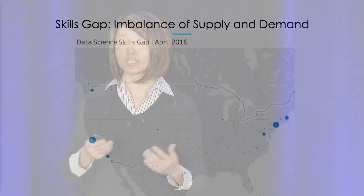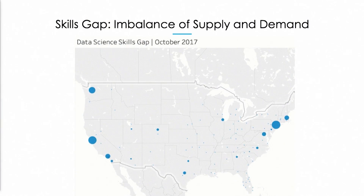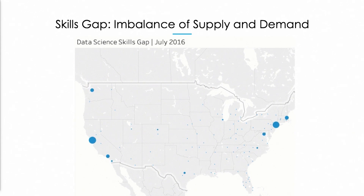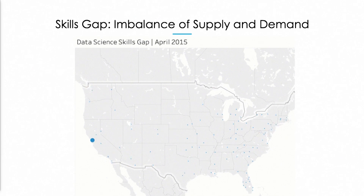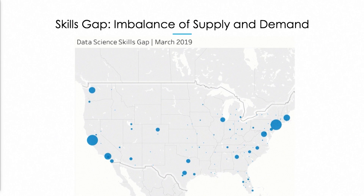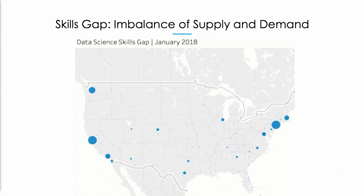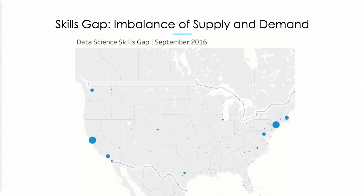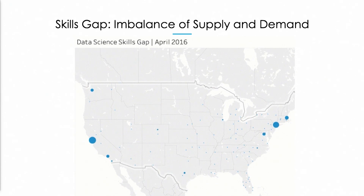As an example, our data helps us understand what kinds of skills are trending over time and what kind of imbalance we see between the supply and demand of various skills across different geographic locations. Data science as a skill is really seeing the gap widen over time — there's much more demand, and it's really across many different geographic locations as well.